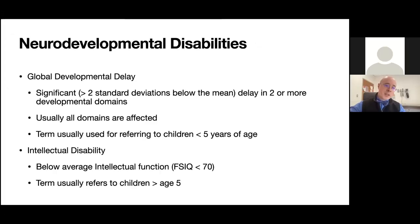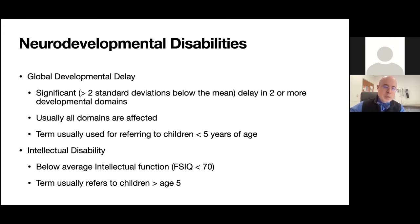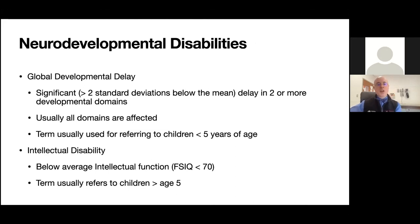We typically use the term global developmental delay for a child who's less than five years of age, versus intellectual disability, which tends to refer to a child with a below-average IQ — less than 70 — usually for a child greater than five years of age. We don't use the term MR anymore; instead, we say a child has an intellectual or developmental disability.